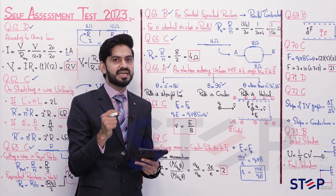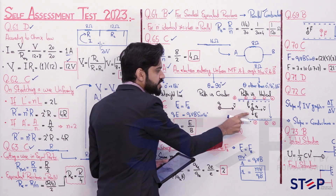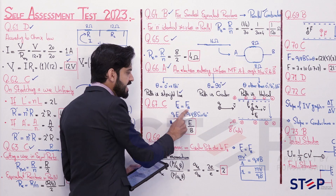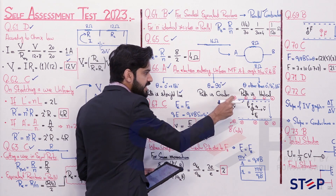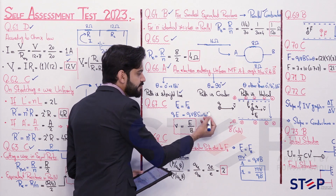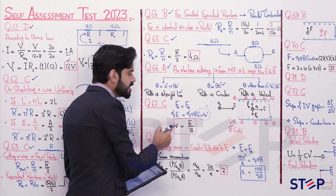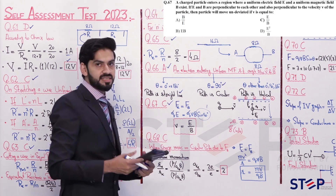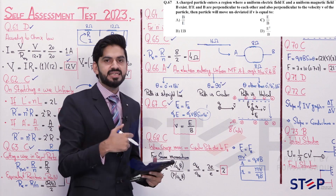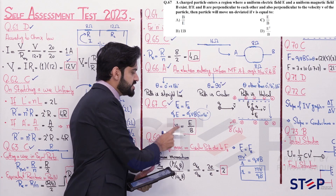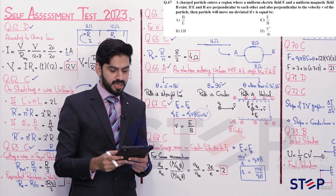For selected undeviated particles, the balance condition gives: qvB sinθ = qE, with θ = 90° so sin90° = 1, thus qvB = qE, and V = E/B. Question 67's answer is option C. The key formula for the velocity selector: V = E/B (electric field divided by magnetic field).